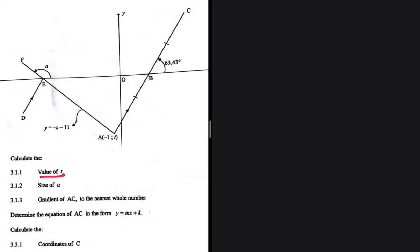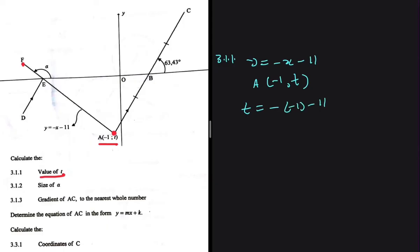We're looking for the value of t, the y-coordinate of point A. Point A lies on line AF, and we're given the equation for that line. For 3.1.1, y equals minus x minus 11. Substituting coordinate A: in place of y we put t, and in place of x we put minus 1, giving t equals minus 1 times minus 1 minus 11, which equals plus 1 minus 11. So t equals minus 10.